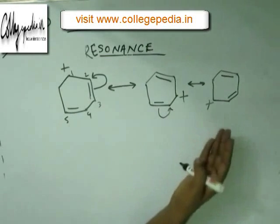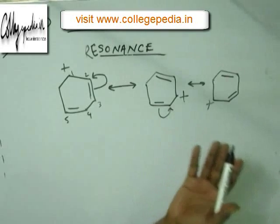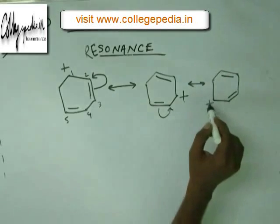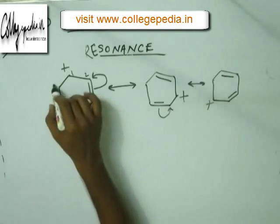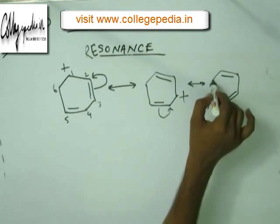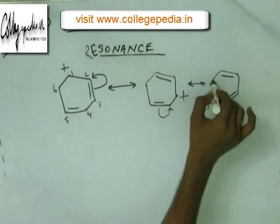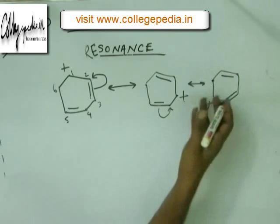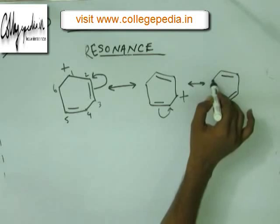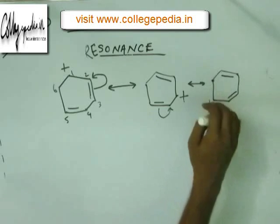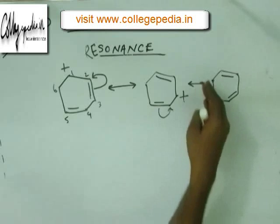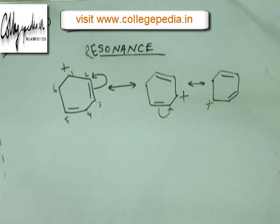These are the three possible resonating structures. You cannot draw the next RS because adjacent to the plus charge at C5 you cannot bring a negative charge — that atom is not making any pi bond. So you cannot break any pi bond to bring electrons into that orbital. That atom cannot have a negative charge, so you cannot have a pi bond there and cannot draw the next RS. These three are the only possible resonating structures.